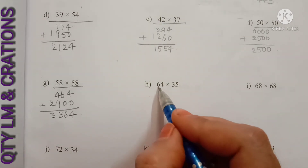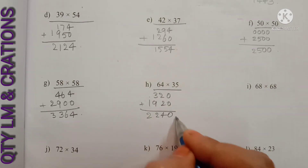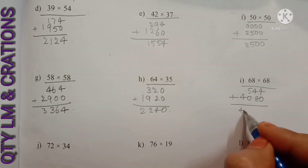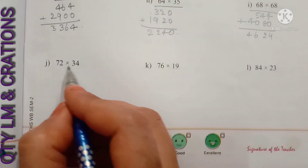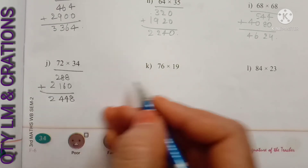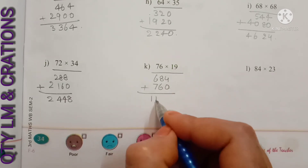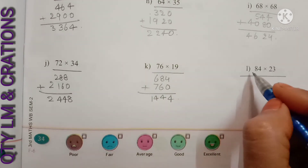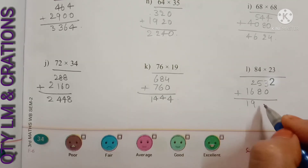H: 64 into 35 — we get 2240. I: 68 into 68 — we get 4624. J: 72 into 34 — we get 2448. K: 76 into 19 — we get 1444. L: 84 into 23 — we get 1932.